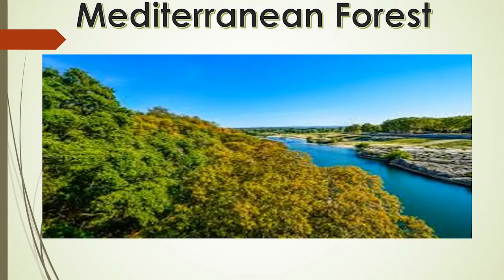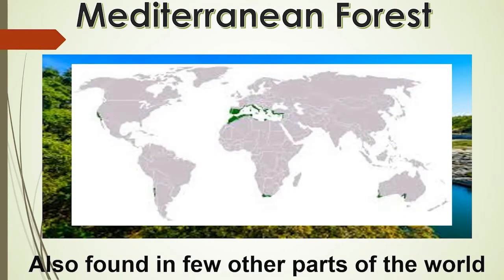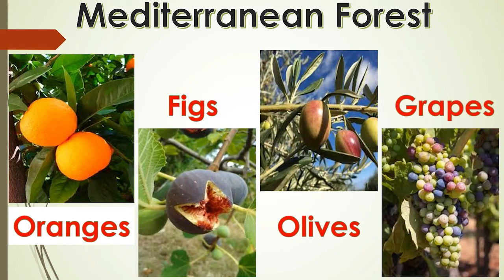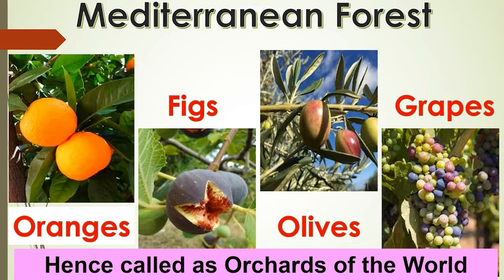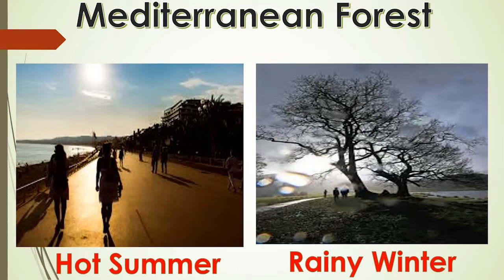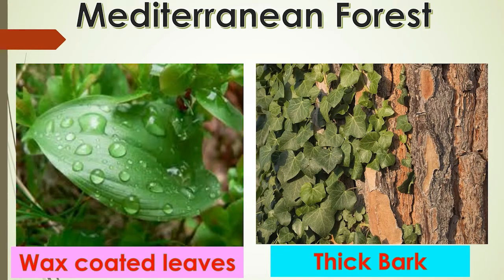Mediterranean vegetation is mostly found in the areas around the Mediterranean Sea in Europe, Africa and Asia. It is also found outside the actual Mediterranean region — in California in the USA, southwest Africa, southwestern South America and southwest Australia. Citrus fruits such as oranges, figs, olives and grapes are commonly cultivated here, which is why it is popularly known as the orchard of the world. These regions receive hot dry summers and mild rainy winters. Mediterranean trees adapt themselves to dry summers with the help of their thick barks and wax-coated leaves, which help reduce transpiration.